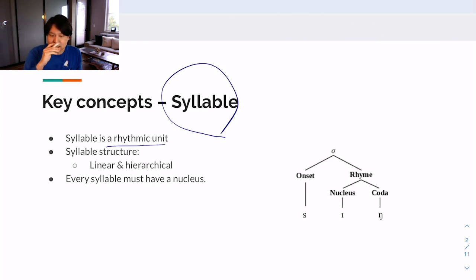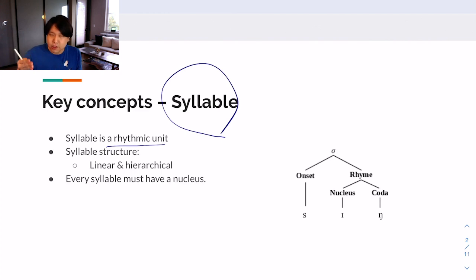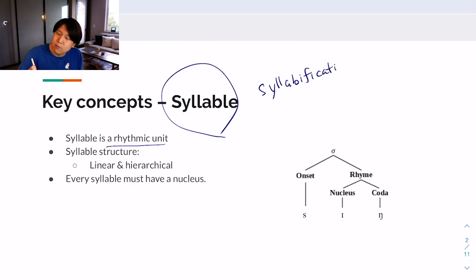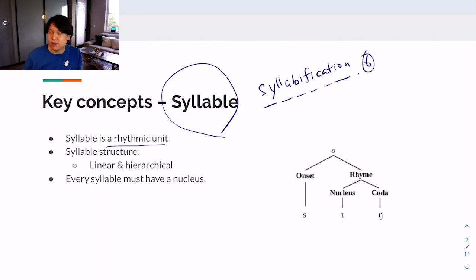A syllable is a rhythmic unit, and as an English speaker, you automatically know how many syllables there are in a word. It's a certain way to divide up the pronunciation of a word into the rhythm that it has. For example, if you say a multi-syllabic word like 'syllabification,' how many syllables are there? There are six syllables within this word. English words can have one syllable, two syllables, or many syllables, but at least they need one syllable.